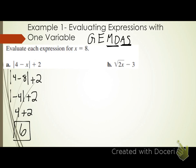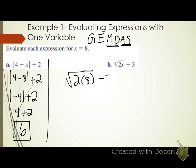Any questions on how I got that? Can I pick up the pace? Letter B: square root of 2x minus 3. Once again, just like on letter A, what's my first step going to be? I've got to replace my variable with the value that it tells me to equal it. So I'm replacing x with 8.